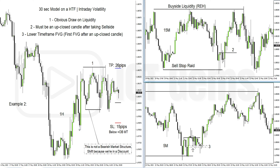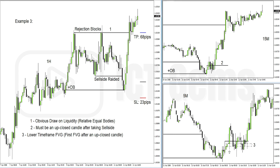You need to have an understanding of where the market is likely to reach to. You have to frame a 15-minute or a 60-minute draw on liquidity — where the market's likely to go. Then on a one-minute or five-minute chart, if you're bearish, there has to be some run above a five-minute swing high, even while it's been going down. It has to go up above it and start trading lower again. Once it does that, you can drop down into a 30-second chart and take a 30-second fair value gap, because the damage has been done on the five-minute chart.